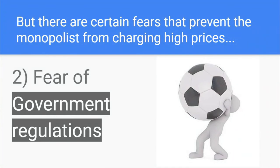The next is the fear of government regulation. The monopolist is well aware that charging unusually high prices or profits is going to attract the attention of the government. So rather than risk government regulation and intervention, he's going to voluntarily fix a low price and earn less monopoly profits.